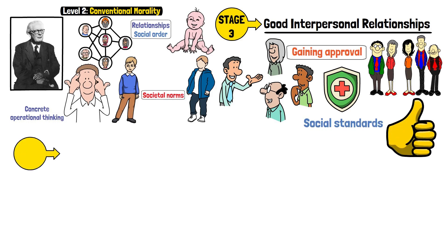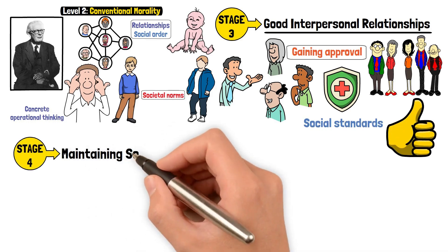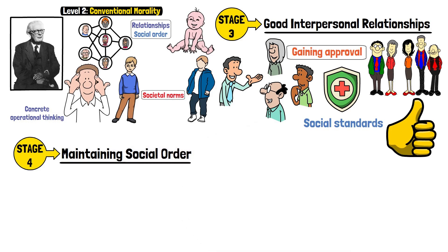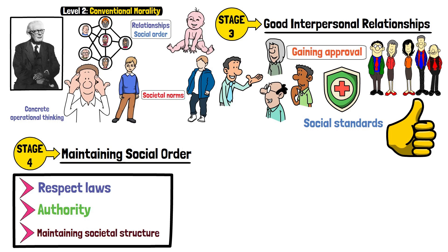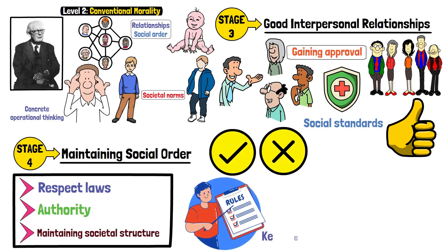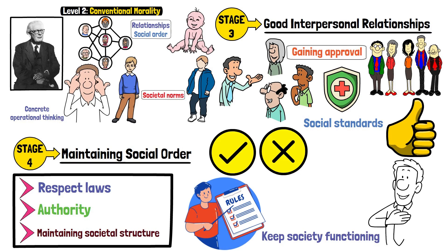Stage 4 – Maintaining Social Order. Morality expands to respect laws, authority, and maintaining societal structure. Right and wrong are seen as following rules that keep society functioning. The emphasis is on fulfilling duties and respecting authority.